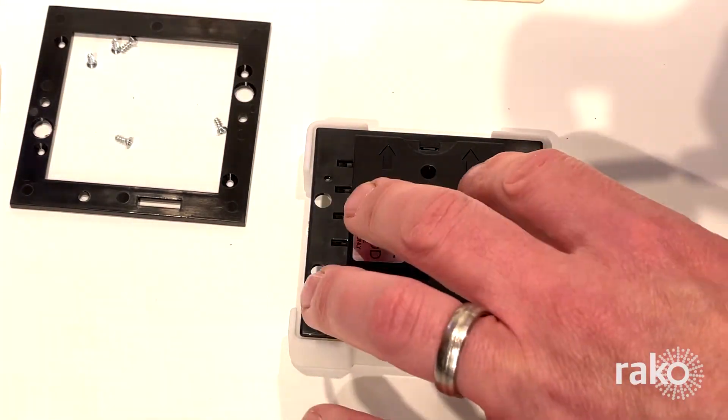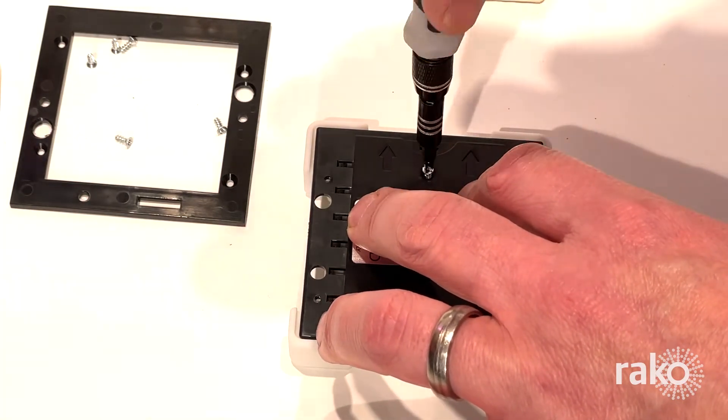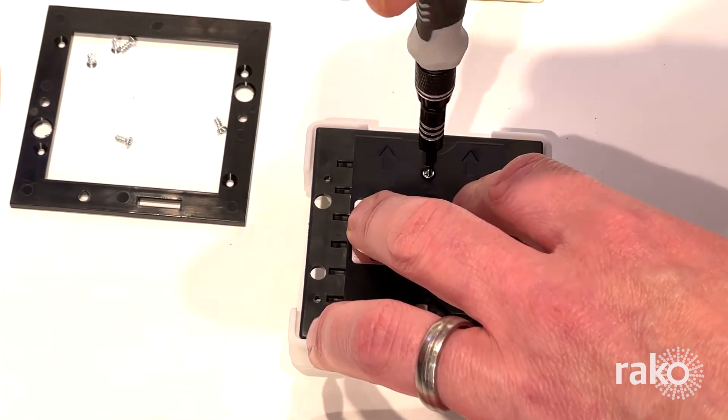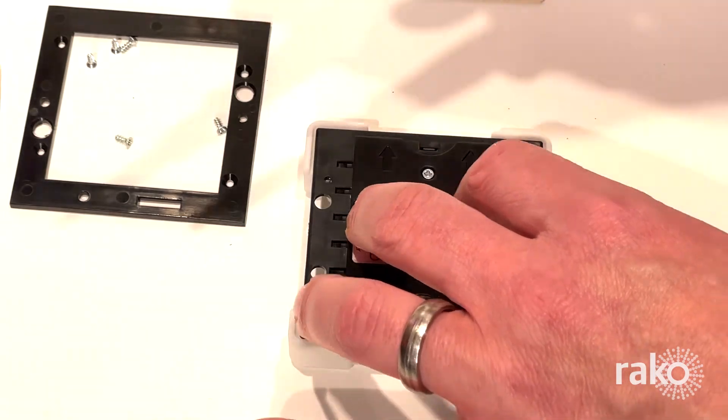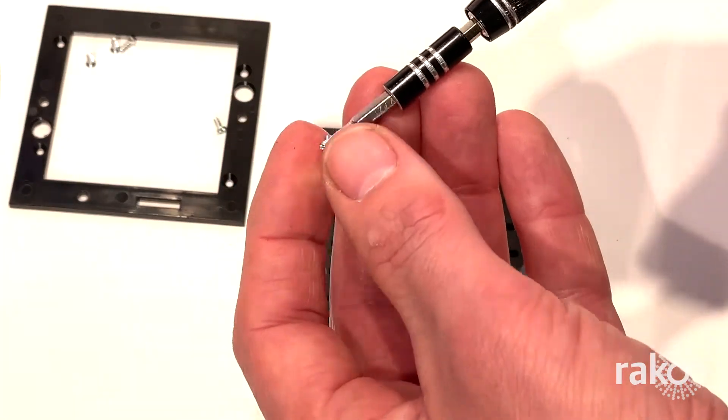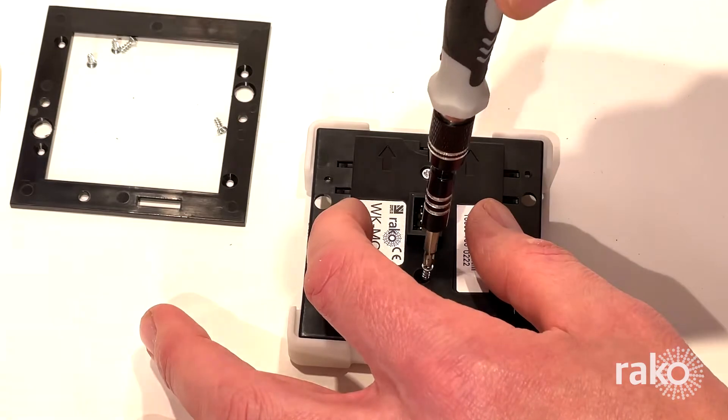Grab your screwdriver and start putting all the screws back in. You need to make sure these screws are tight enough to hold it all together, but be careful not to over tighten them. If you have one, you can use a torque screwdriver with a setting of 0.15 Nm.